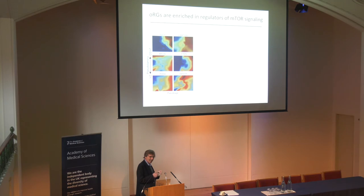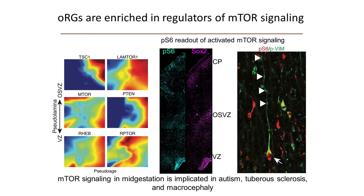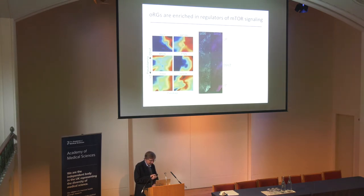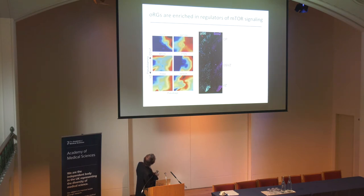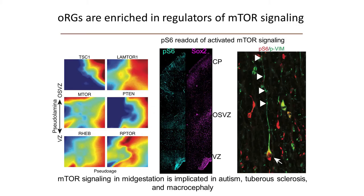The other pathway I wanted to highlight, very relevant to diseases we'll hear about in this symposium, is the mTOR signaling pathway, with a whole range of activators and negative regulators. These pathway genes for mTOR signaling are enriched or uniquely expressed in human outer radial glial cells. To confirm that, we took cortical sections of fetal brain and stained them for markers of activated mTOR signaling, including phosphorylated S6 protein, which is expressed in the outer subventricular zone and co-expressed by ORG cells — you can actually see their morphology very nicely, including the basal fiber, highlighted by the presence of this activated mTOR signaling protein.